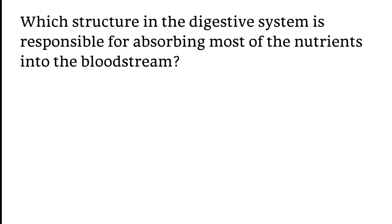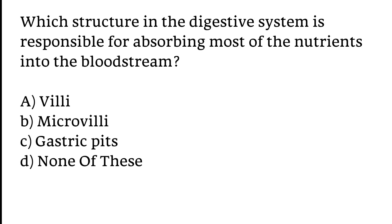Which structure in the digestive system is responsible for absorbing most of the nutrients into the bloodstream? Options: A) villi, B) microvilli, C) gastric pits, D) none of these. The correct answer is option A. Villi are the structures responsible for absorbing most of the nutrients into the bloodstream.